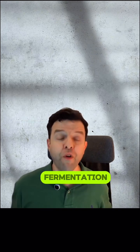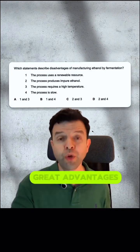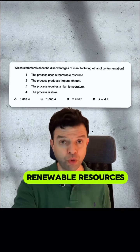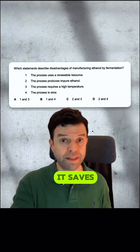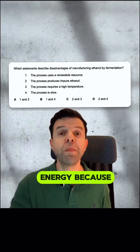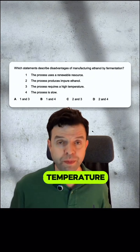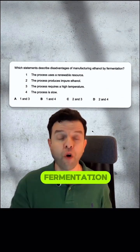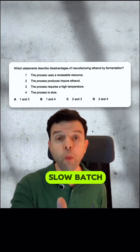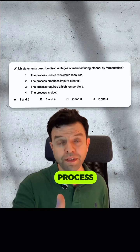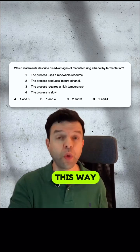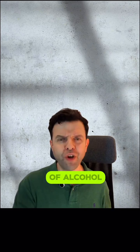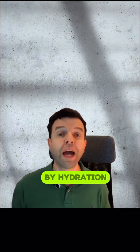Production of alcohol by fermentation has two great advantages. First, it uses renewable resources, that is glucose. Second, it saves energy because it's run at low temperature. The two disadvantages of fermentation are that it's a slow batch process and the alcohol produced is impure. The opposite applies to the production of alcohol by hydration.